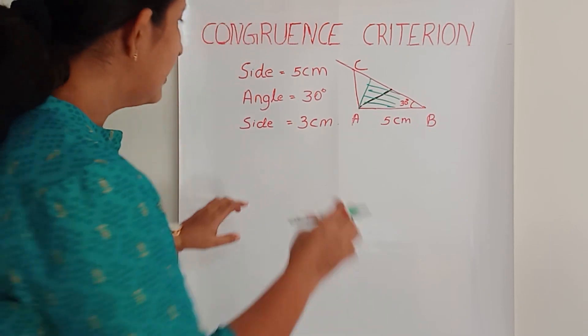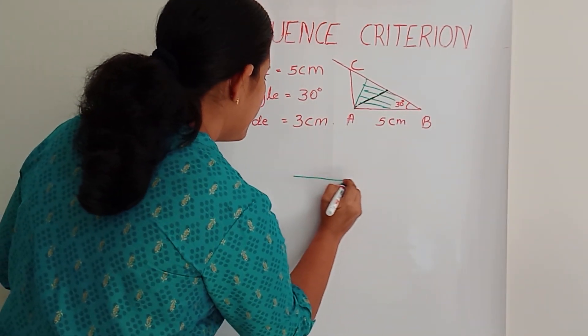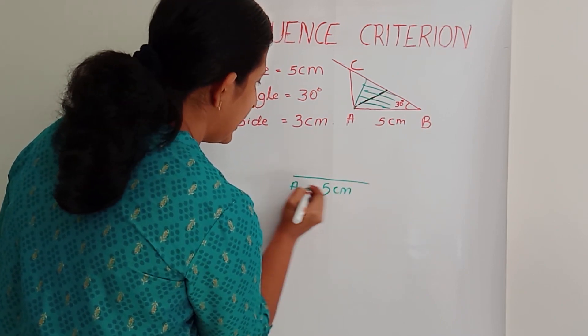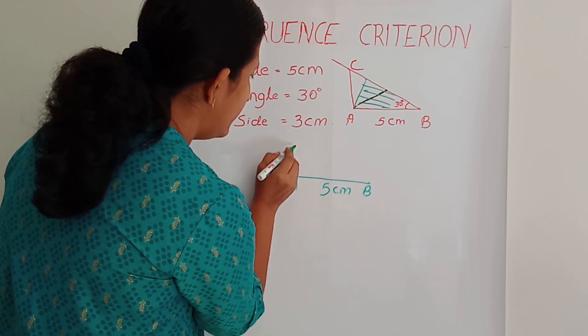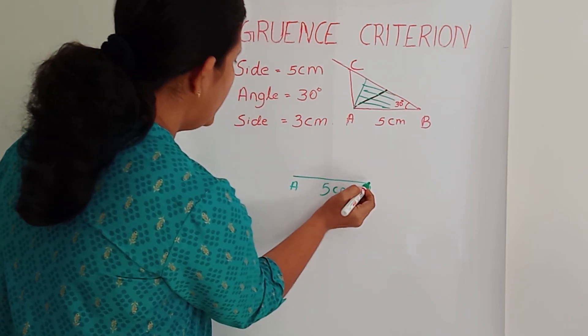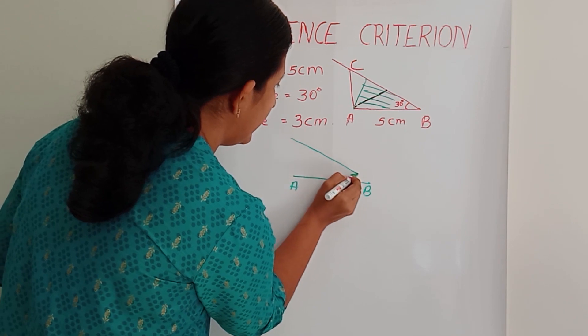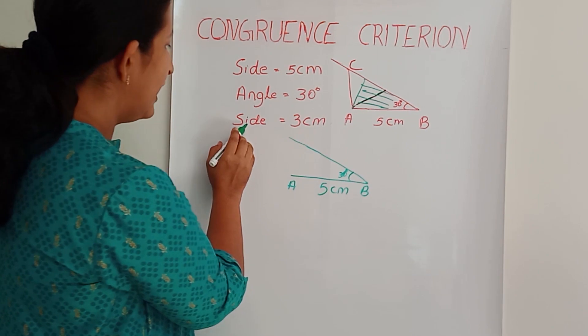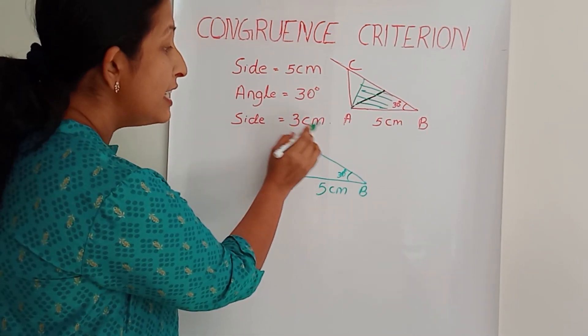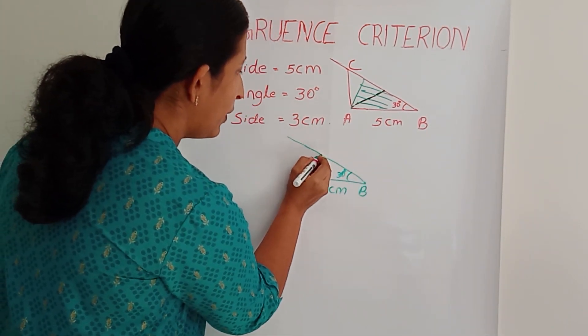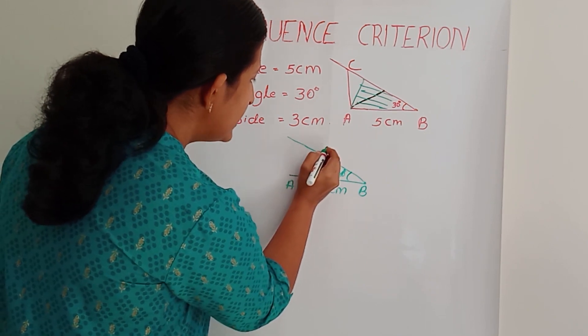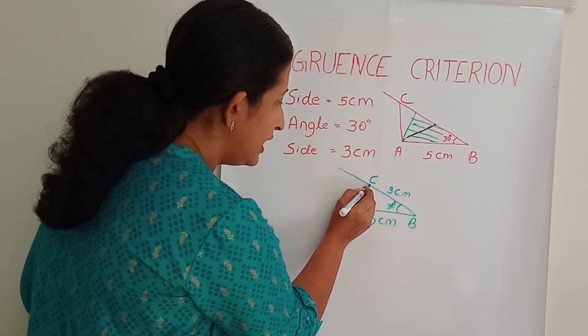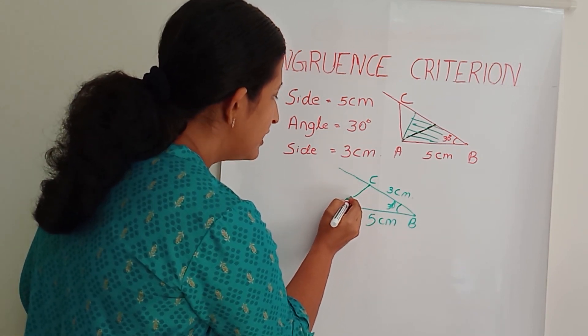So this is 5 cm, and again this is AB. This is the point B. At the point B, he measured 30 degrees. And one more data, side is 3 cm. So from B to the point C, it is 3 cm. So she got the point C and she joined A and C.